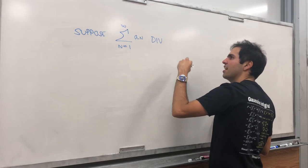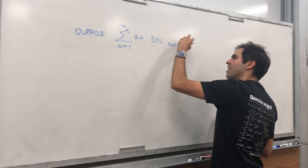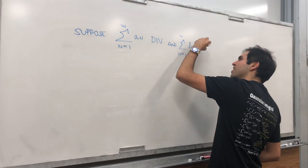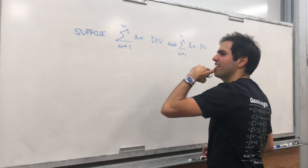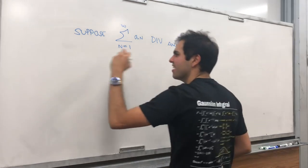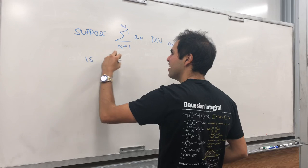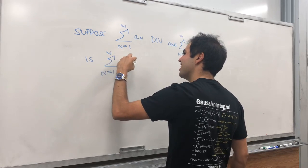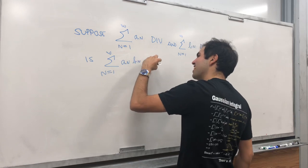And you have another series, 1 to infinity, b_n, also diverges. Is it possible to get the series as n goes from 1 to infinity, the product of a_n and b_n, to be a convergent series.